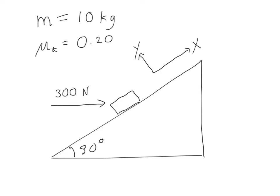Let's consider the following scenario, where we have a block on an incline of 30 degrees. We can apply a force to this block, and we won't assume this is a nice ideal system — there will be some level of friction. We can specify the mass, the coefficient of friction, and the value of this applied force, which will be completely horizontal.